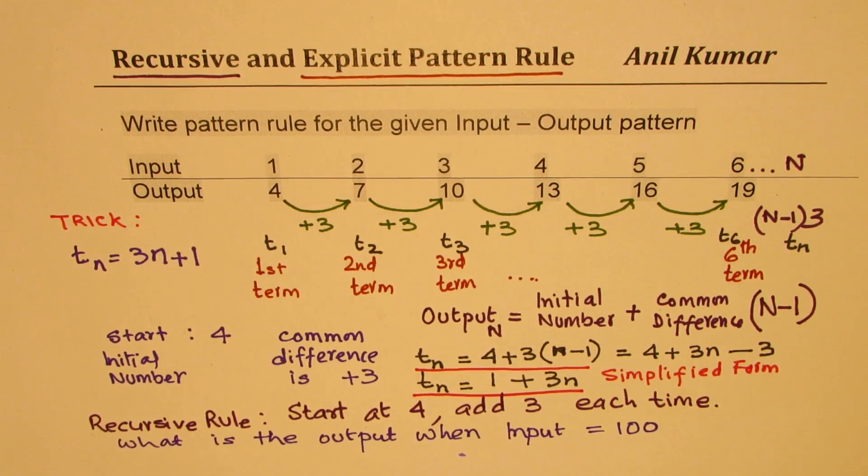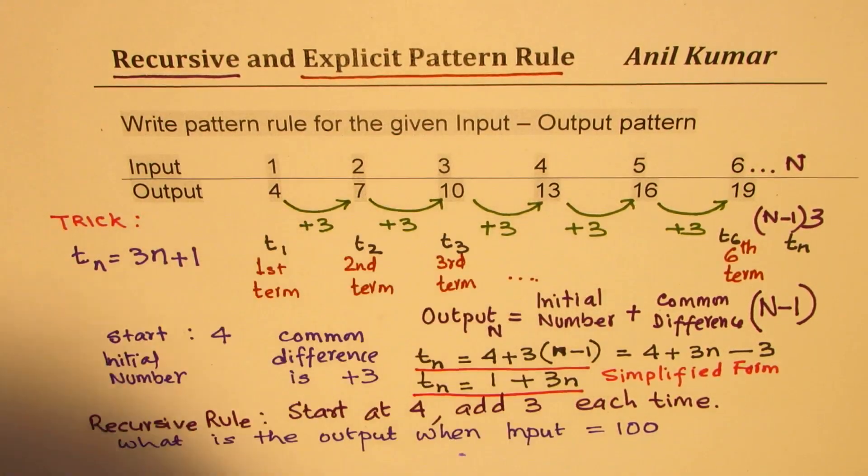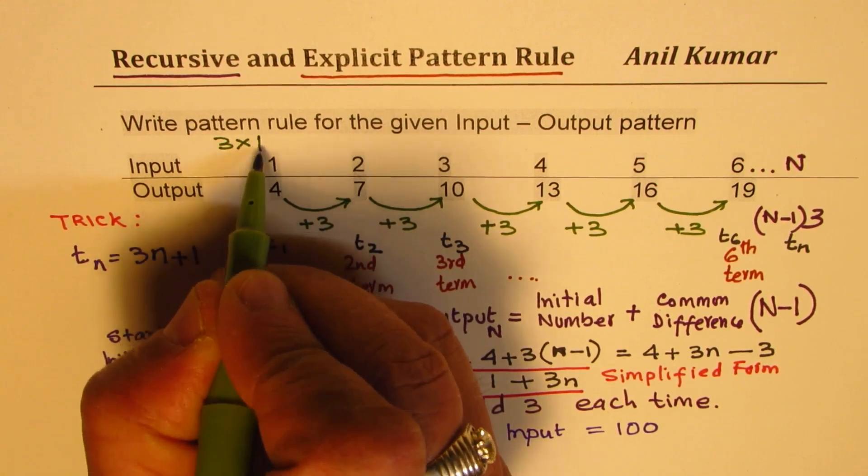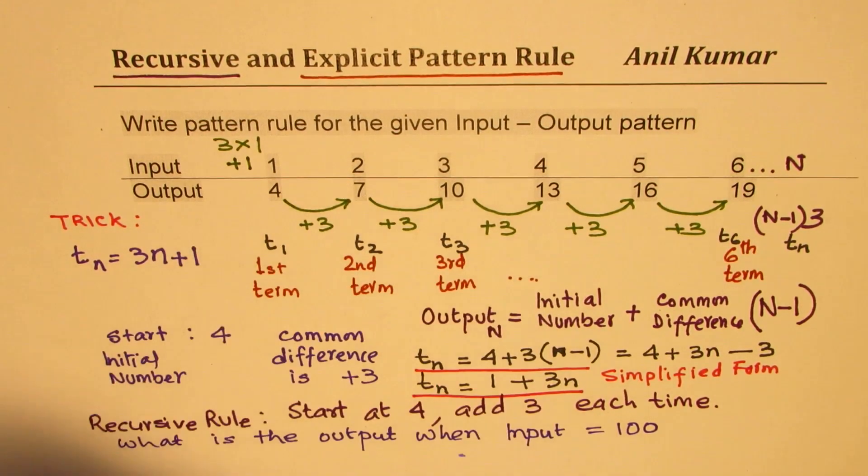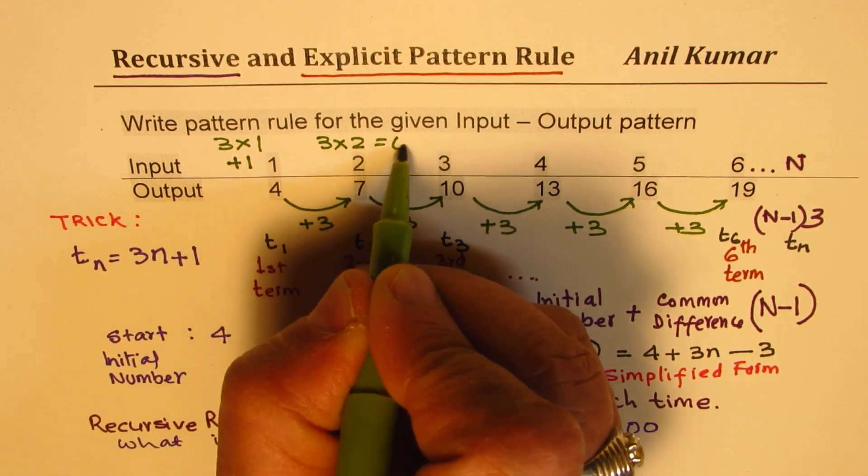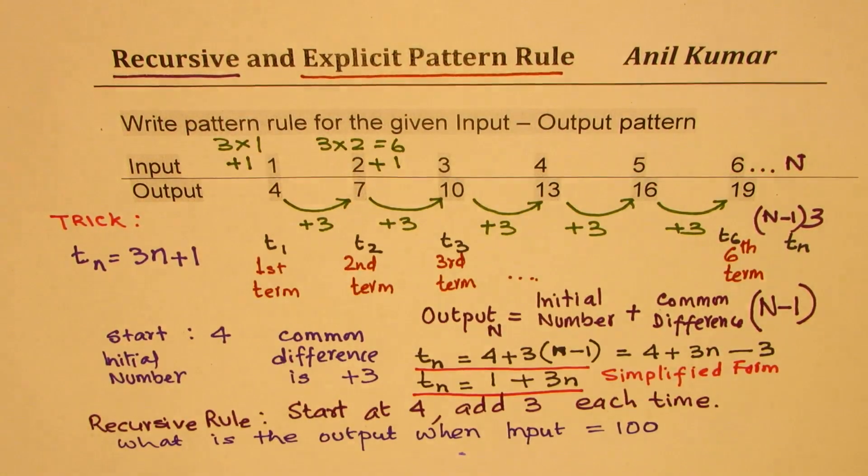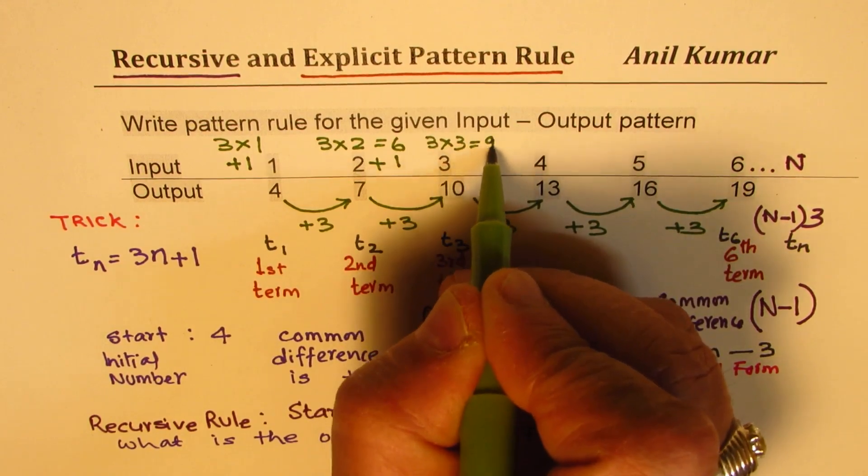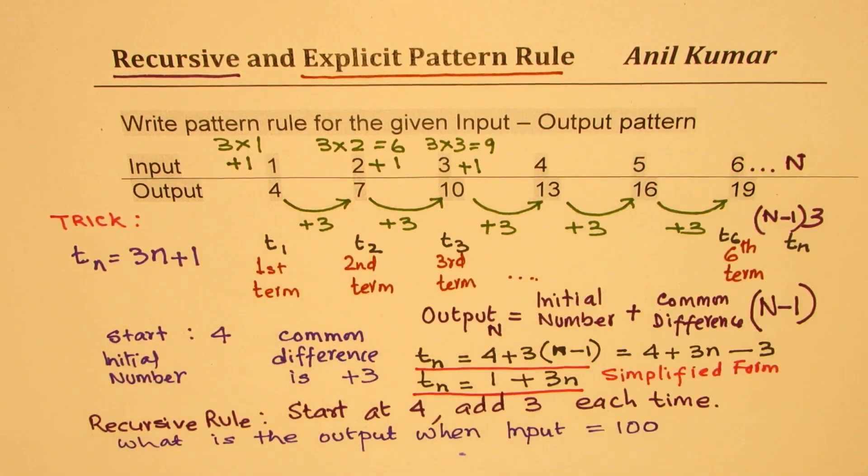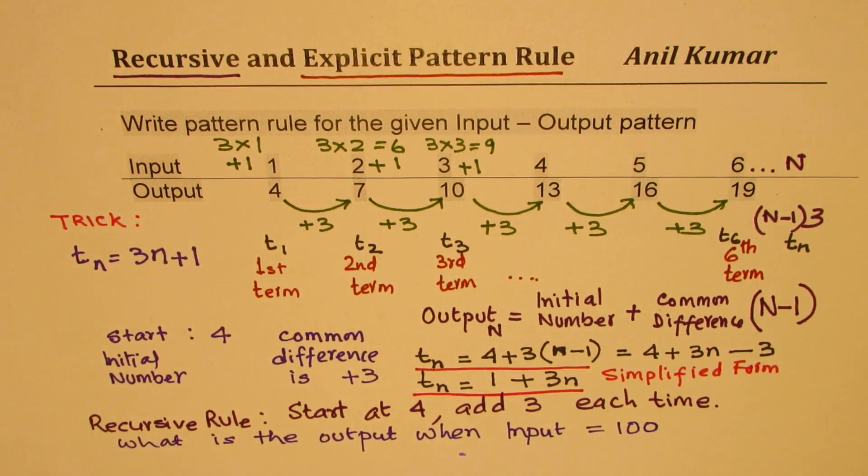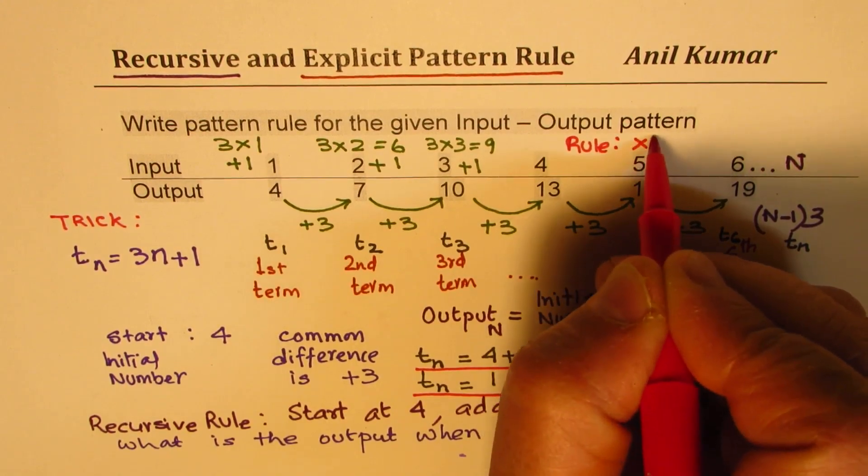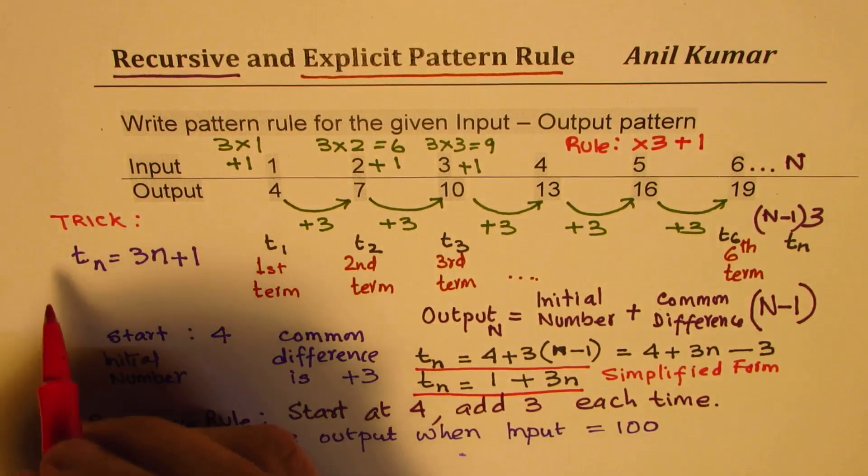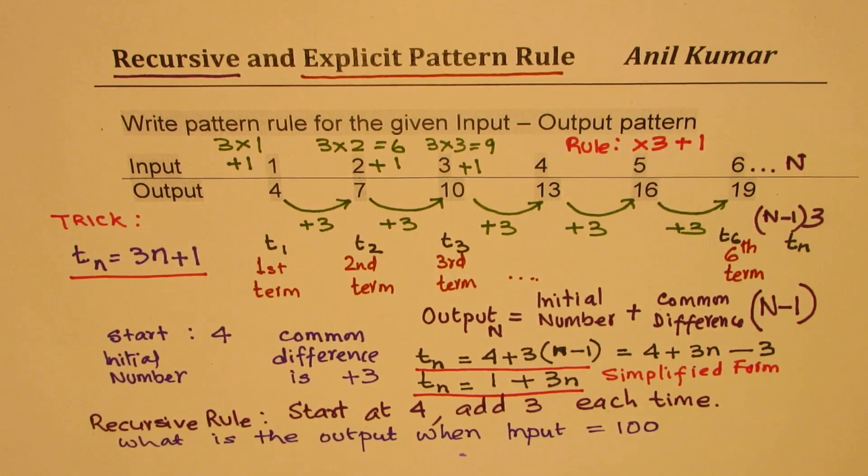And my shortcut trick is, once you know what common difference is, which is 3, then how do you get 4? We do like this. 3 times 1 is 3. How do I get 4? You add 1 to it to get 4. 3 times 2 is 6. How do I get 7? You add 1. Do you get it? 3 times 3 is 9. But I need to get 10. You have to add 1. Do you get it? So, in this process, you can say that the rule is times 3 plus 1. Do you get it? And straight away, you get your rule. So, that is how you can directly get your explicit rule by looking at it.